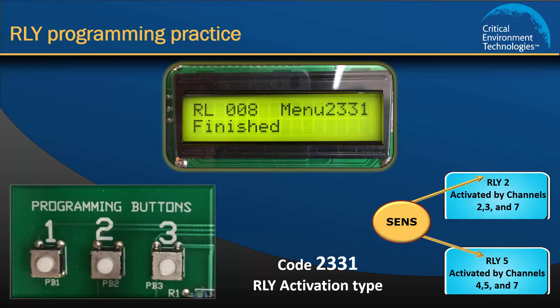If you make a mistake or pass the relay you meant to change the activation type for, you will have to scroll through all 8 relays to the end and then enter the menu code 2-3-3-1 again and start all over. There is no going backwards in this menu code.